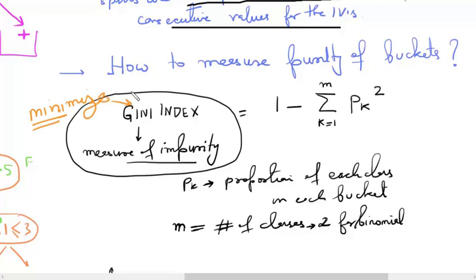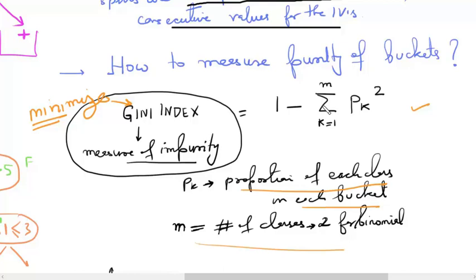As the decision tree minimizes the Gini index, it indirectly increases the purity of the bucket. The Gini index is measured by the formula: 1 minus the summation of pk squared. Here pk is the proportion of each class in each bucket. For a binary classification problem, it is the proportion of zeros and ones in each bucket. M represents the number of classes — for a binomial classification, M equals two.